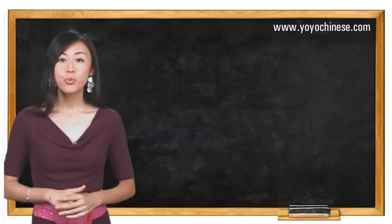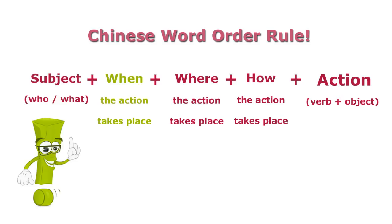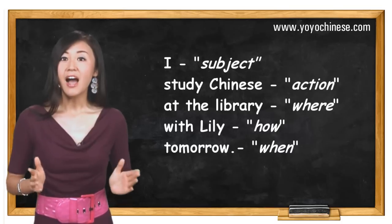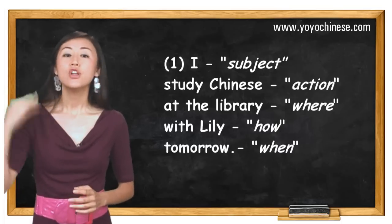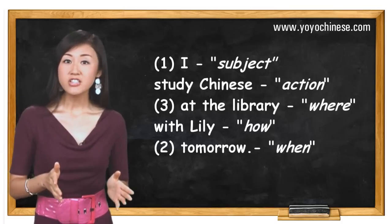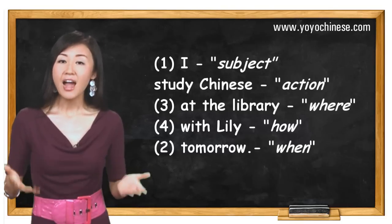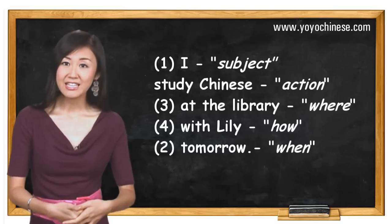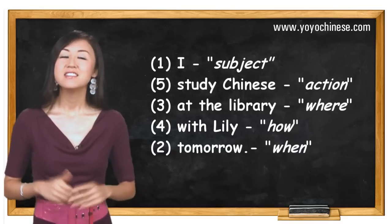So according to the Chinese word order rule — subject, when, where, how, and then the action — subject 'I' should be put at the beginning, then it's followed by time: tomorrow. Location, which is at the library. How the action is done: with Lily. And then the action: study Chinese.